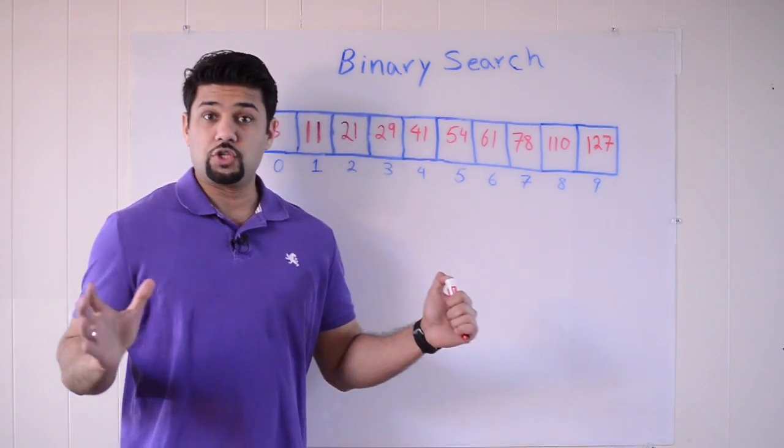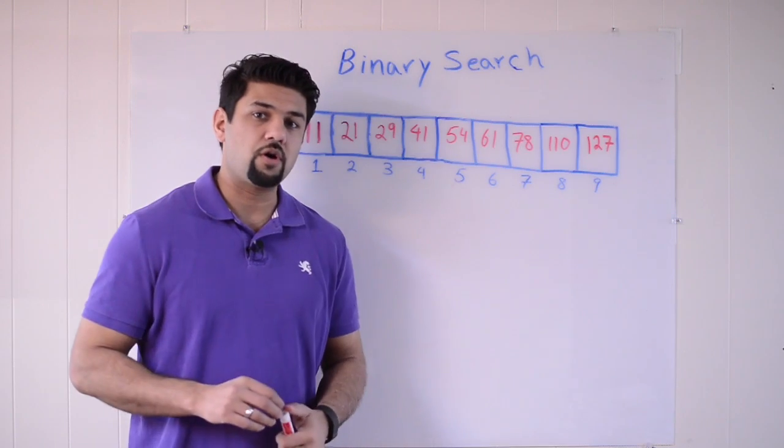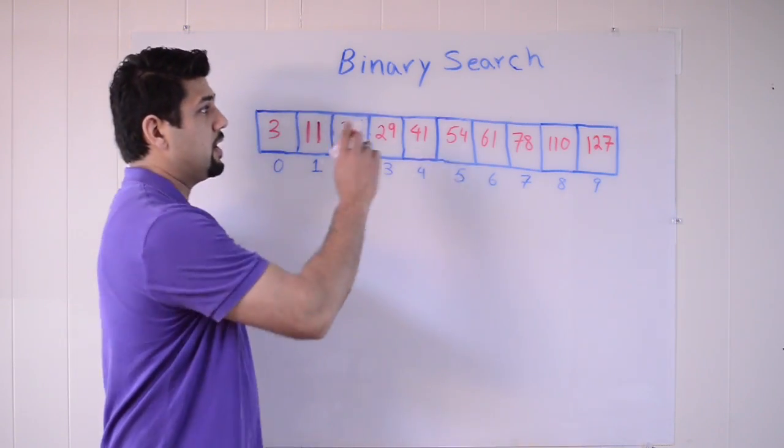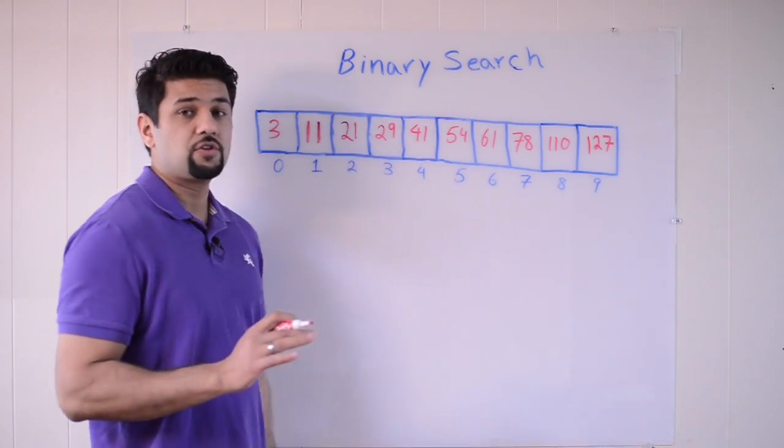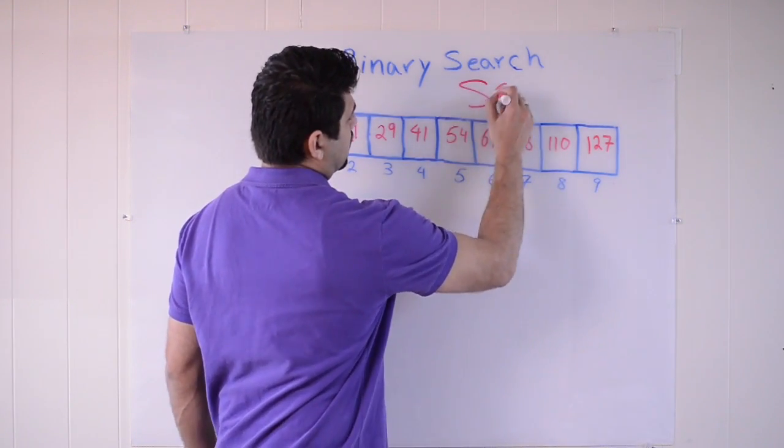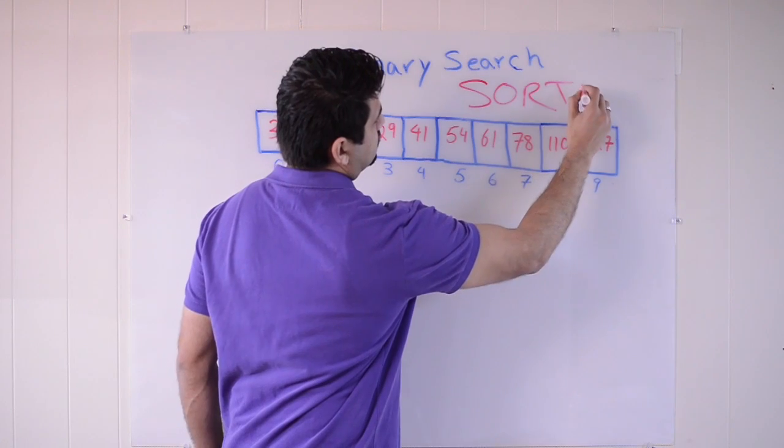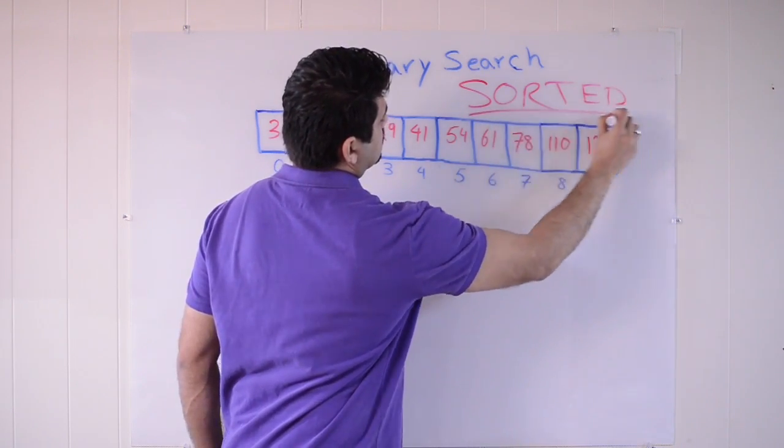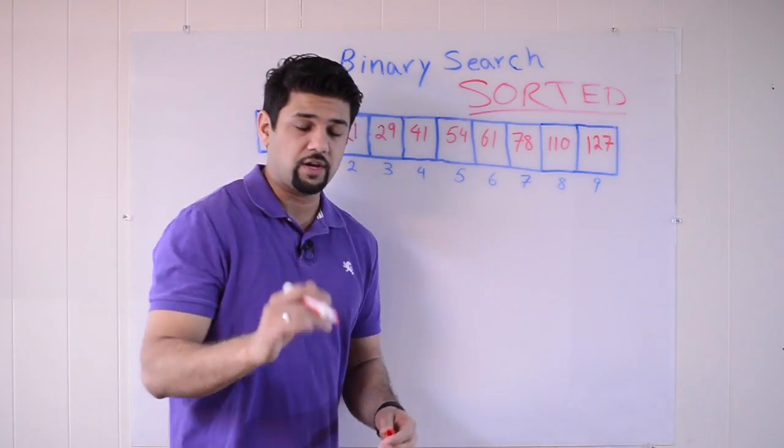If the books were sorted, I could be much smarter in the way I approach the problem. I can use binary search. So to implement binary search, the number one condition is the data must be sorted. If it's not sorted, we've got to use linear search.